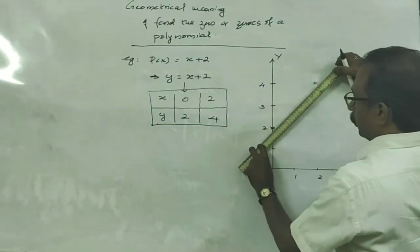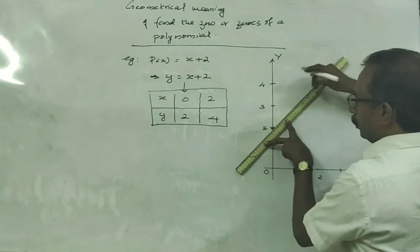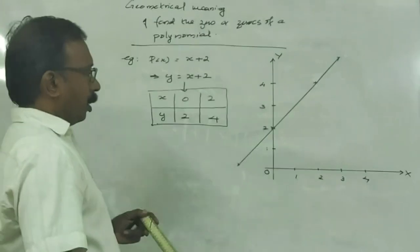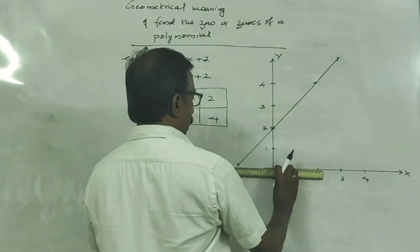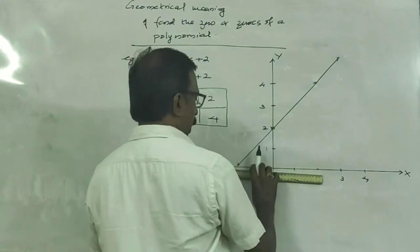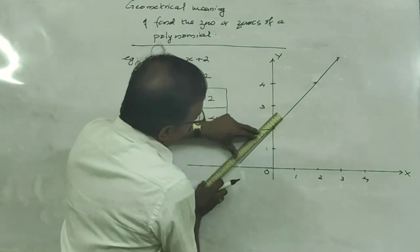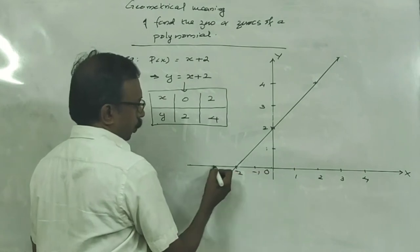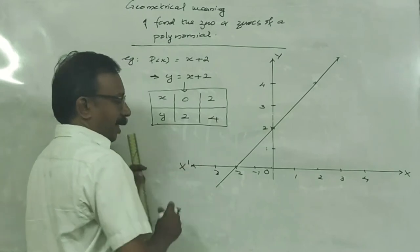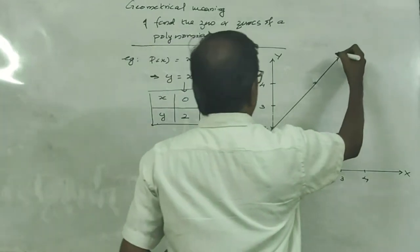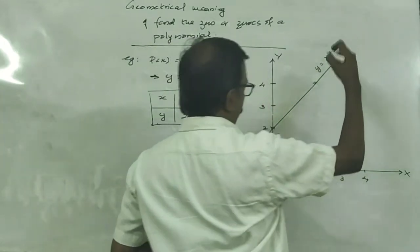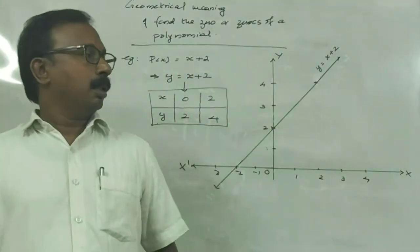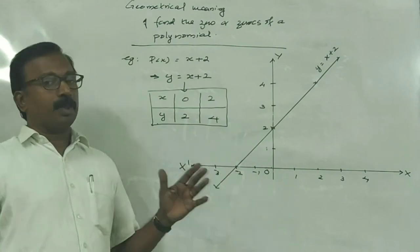Now we draw a graph using these two points — draw a straight line through these two points. We have to extend the graph to intersect the x-axis. Only then we can find the zero of this linear equation. The points on the negative x-axis are minus 1, minus 2, minus 3, etc. This is the x-dash axis. This is the graph of y = x + 2. How can we find the zero of this polynomial using this graph? We find the point of intersection of the graph and the x-axis.